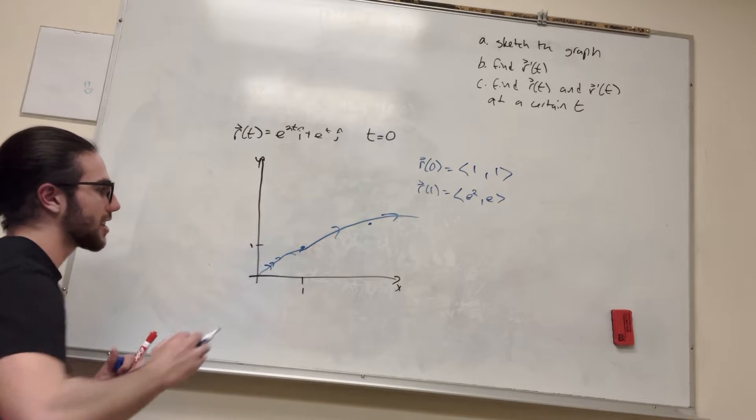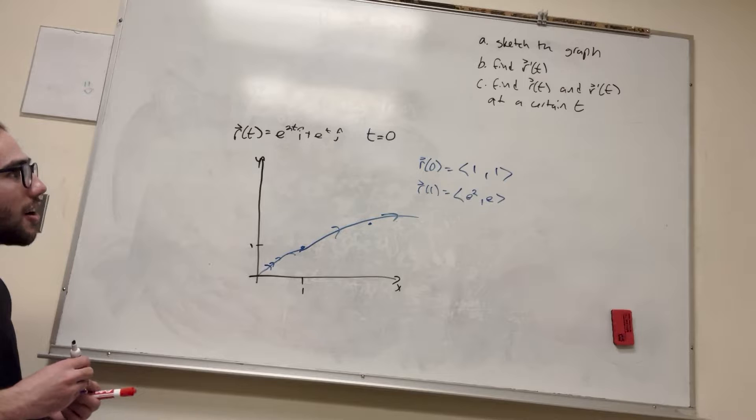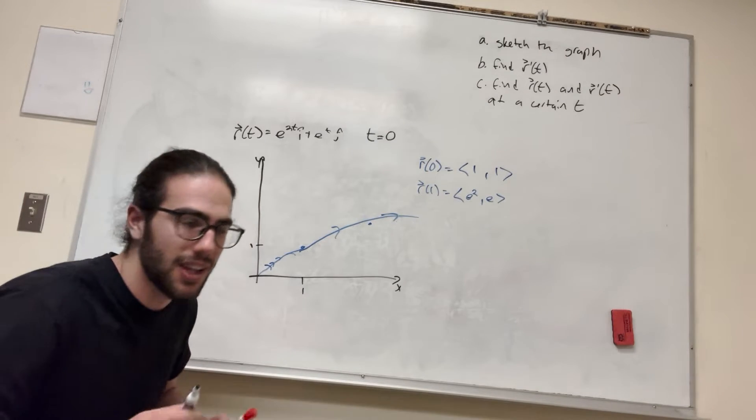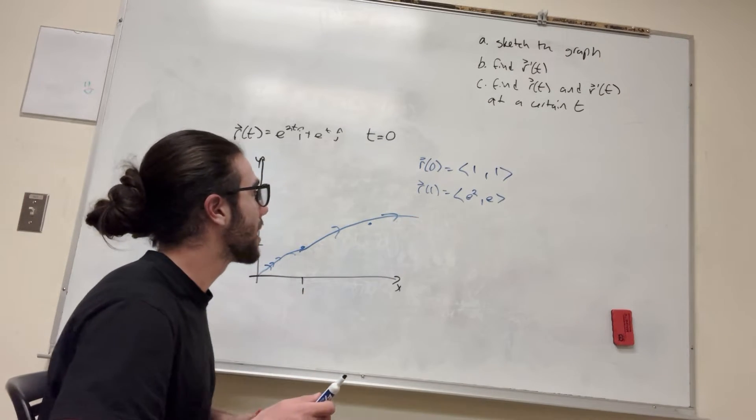And you can kind of see how that would expand out. Alright, so now it wants us to find r prime of t. So what is r prime of t? Well, it's just the derivative of this function, basically.